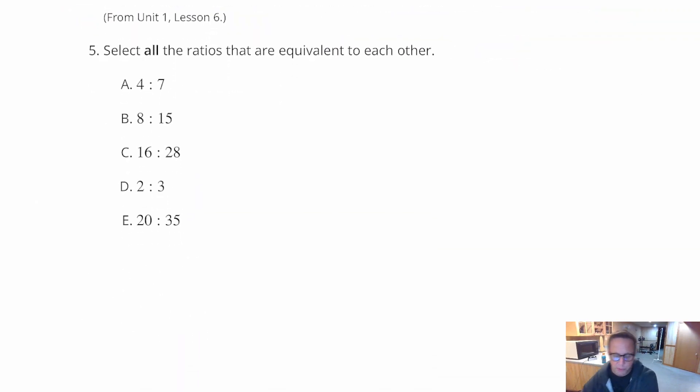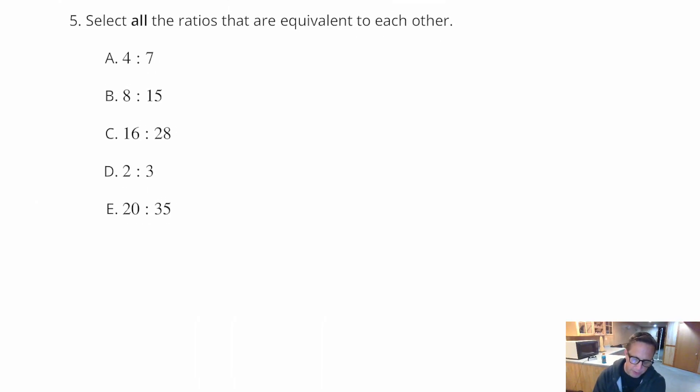Select all the ratios that are equivalent to each other. We're just looking for equal ratios here. We've got 4 to 7, 8 to 15, 16 to 28. What I kind of see here is this particular ratio right here can be simplified. You can divide that by 4. You can divide both those numbers by 4. And, when you divide those by 4, you get 4 to 7. And, holy cow, those are the same, aren't they? These are the same.